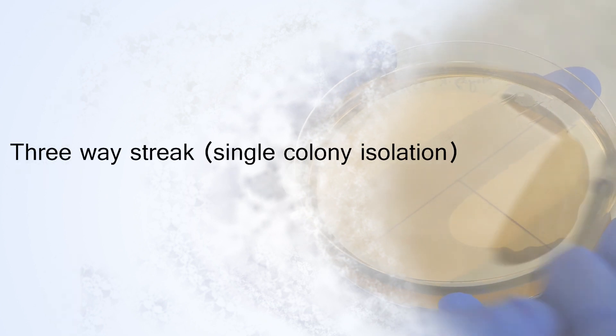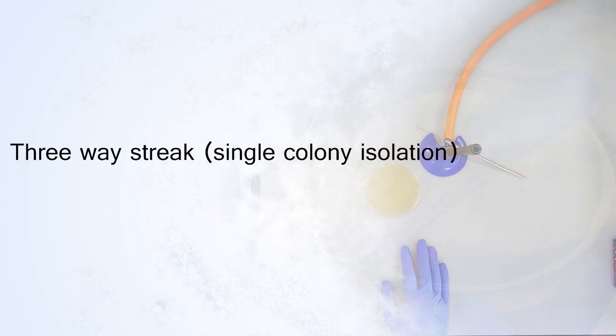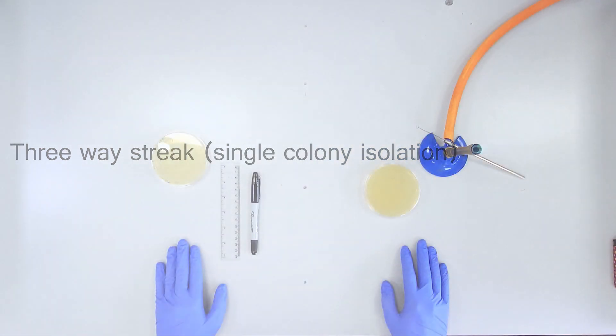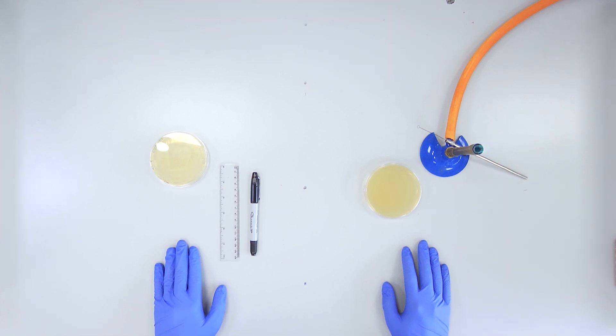How to perform a three-way streak to isolate bacterial colonies. Make sure you have the following three items in front of you at your workstation: a sterile TSA plate, an inoculating loop,